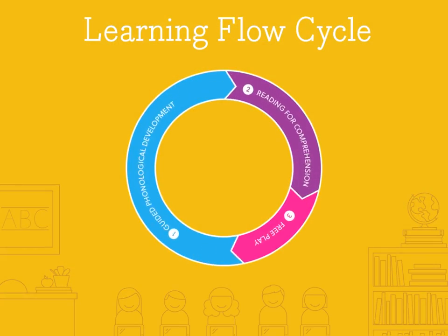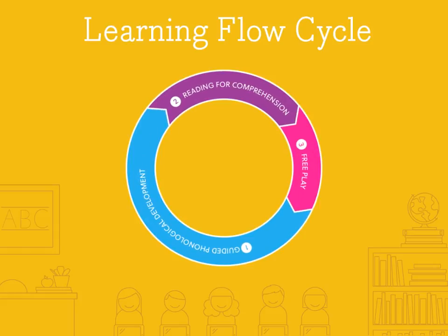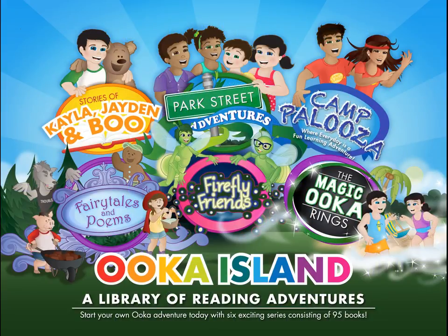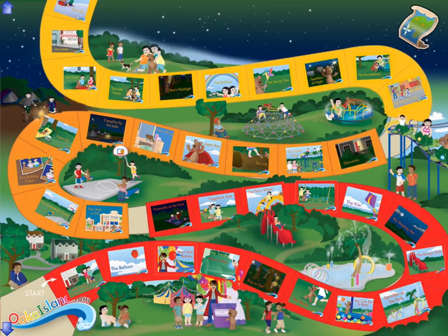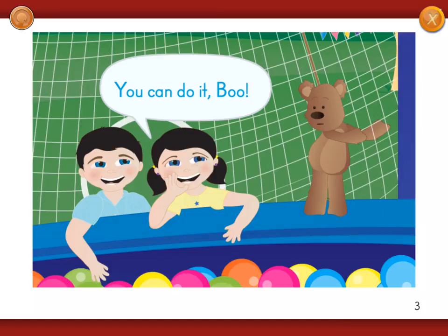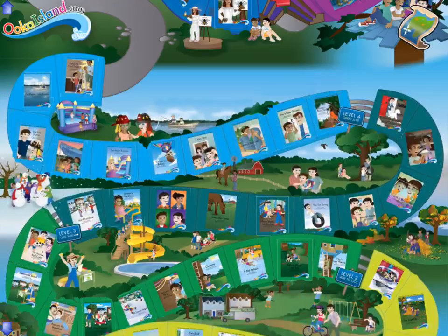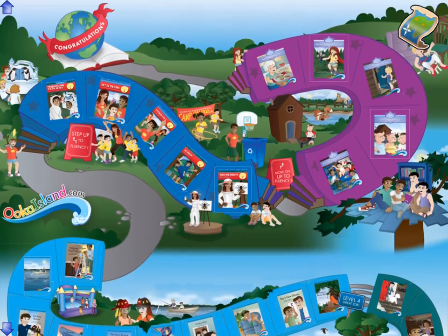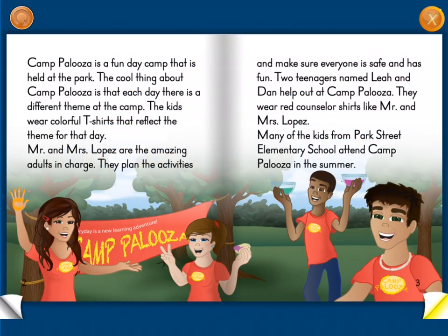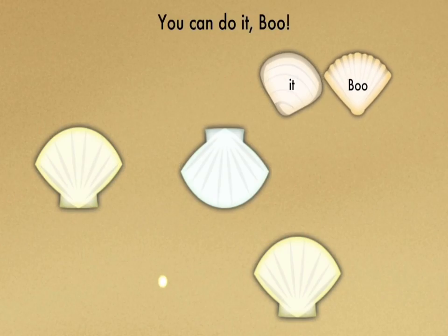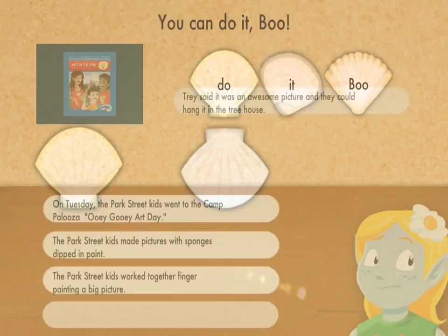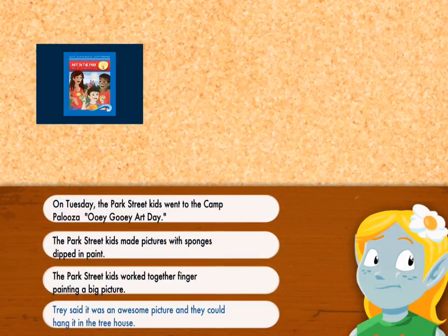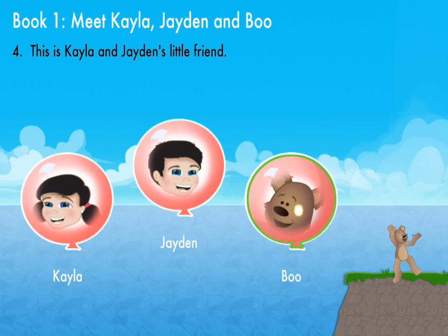In Part 2, children unlock a new book and the focus is on reading for comprehension. Uka Island has 85 e-books in a built-in e-reader called the Popcorn Library. Children will read each new book twice, followed by fun reading activities. If children are unable to finish the book in one session, they will have the chance to complete the book and its activities the next time they log in.